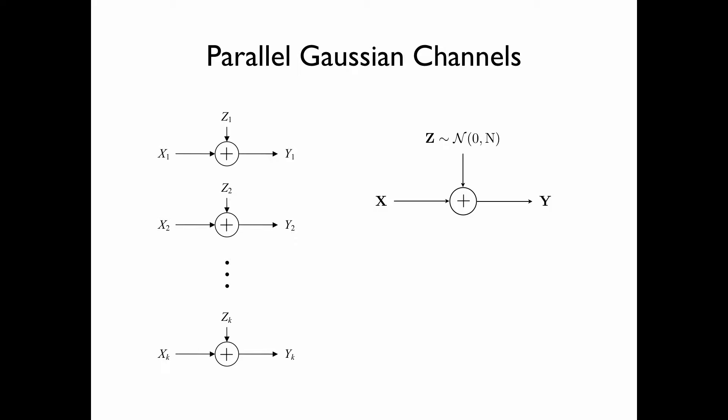The noise vector z is jointly Gaussian with mean zero and covariance matrix N, where the covariance matrix N is a diagonal matrix with diagonal elements equal to n1, n2, up to nk. This means that the noise variables z1, z2, up to zk are uncorrelated, and because these random variables are jointly Gaussian, it implies that they are mutually independent.